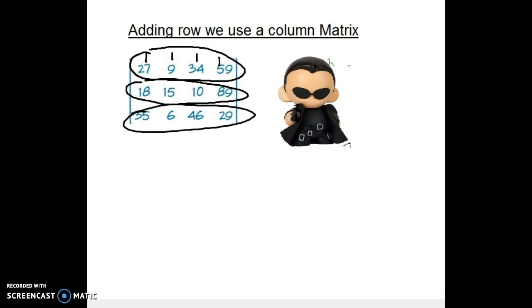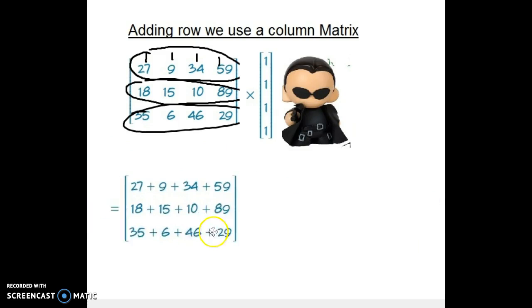You multiply this matrix with a matrix at the back in this form: four ones in a column. If you want to add up the lines, you multiply by four ones in a column. Put it in a calculator and the answer will give you the sum of each line.